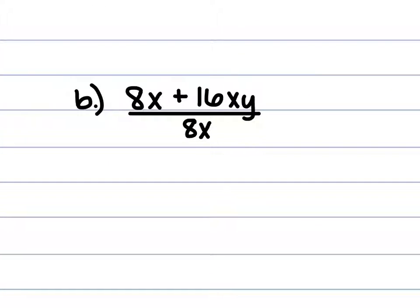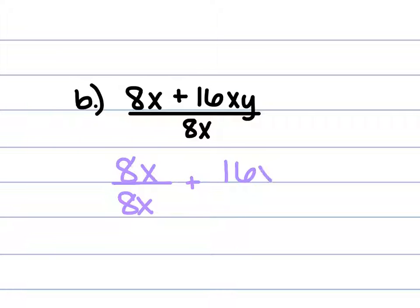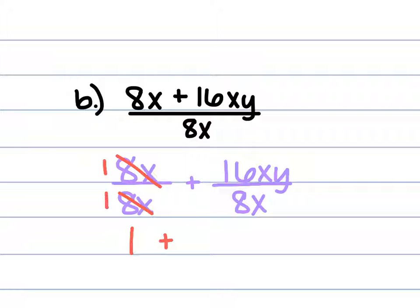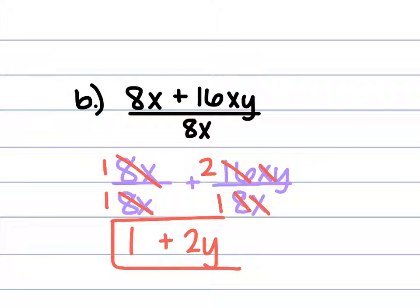For b, we have 8x plus 16xy, all over 8x. We can break this up to be 8x over 8x plus 16xy over 8x. The 8x divided by 8x becomes 1. The 16 divided by 8 is 2, and the x's cancel, leaving 2y. So the answer is 1 plus 2y.